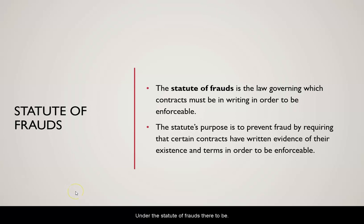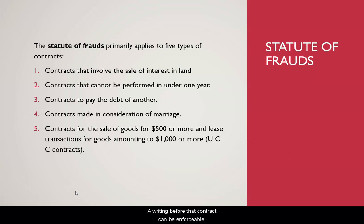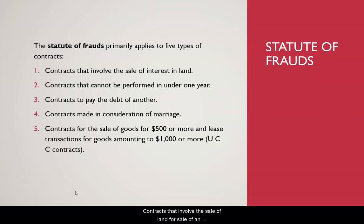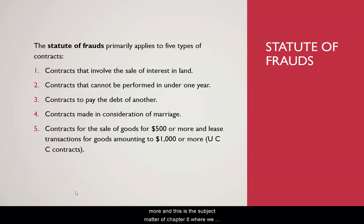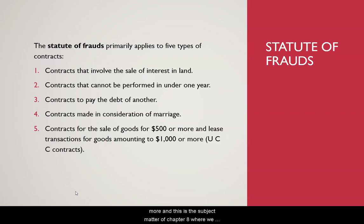What kind of contracts require a writing under the statute of frauds before they can be enforceable? Your textbook covers five: contracts involving the sale of land or an interest in land; contracts not performable in under one year (12 months); contracts to pay the debt of another; contracts made in consideration of marriage; and contracts for the sale of goods over $500 — or at least transactions of $1,000 or more. The sale of goods is covered in chapter 8.